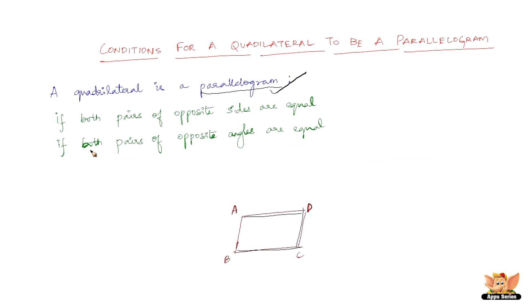The second condition is if both pairs of opposite angles are equal. The opposite angles here are angle B and angle D is one pair of opposite angles, and angle A and angle C are another pair of opposite angles. If these pairs of opposite angles are equal, then the given quadrilateral is again definitely a parallelogram.